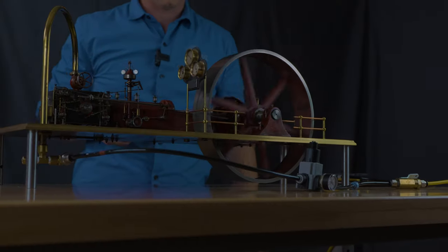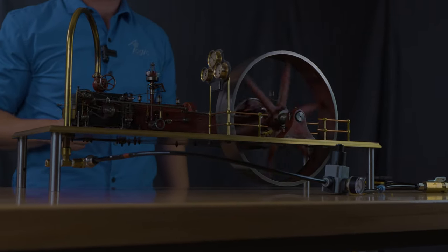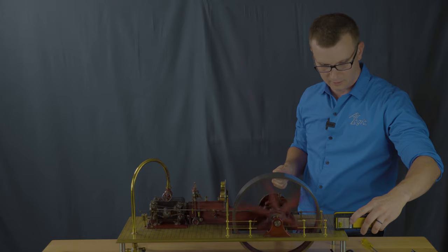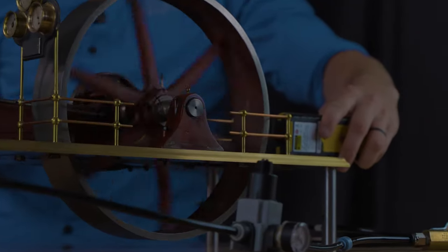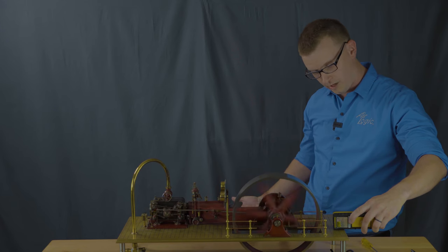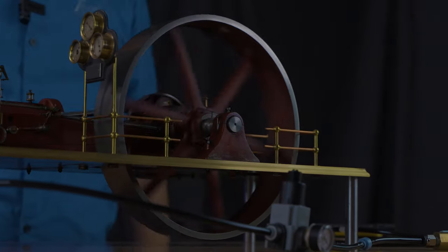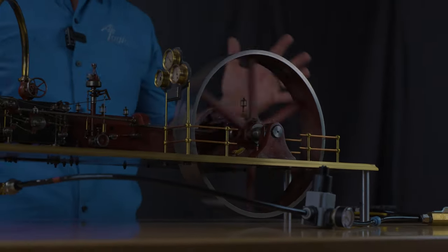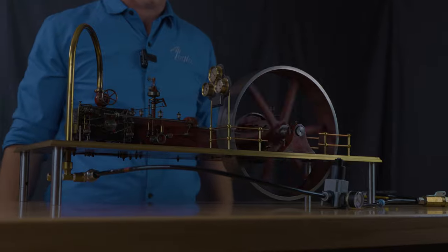Alright, now it's going, we're making some power. Let's see what we got. Let's get a good reading. Just over 100 RPM, awesome. So that is in spec for this engine. This model Corliss engine is running exactly where we need it to be.